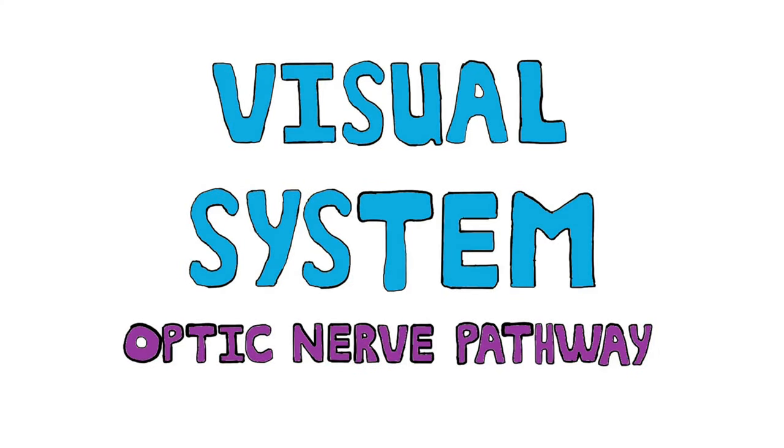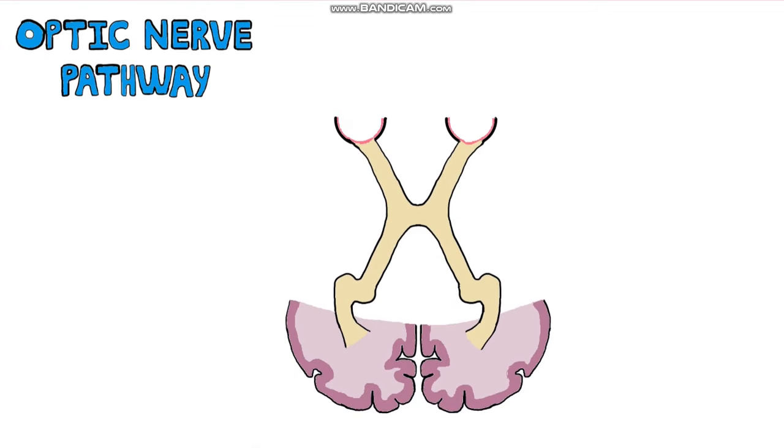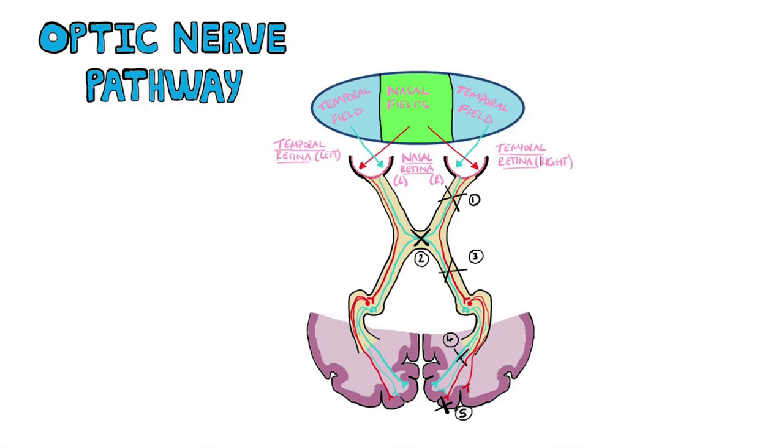Alright, so the optic nerve pathway. Essentially the path that is taken once the retina receives a stimulus that ultimately leads to us being able to see.